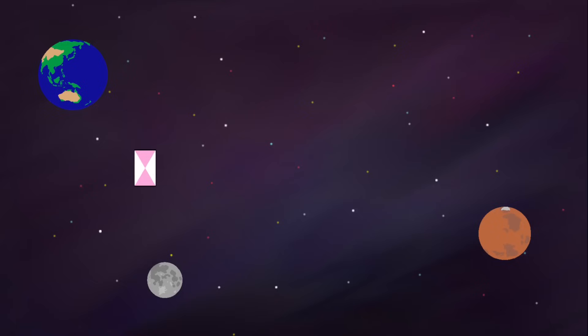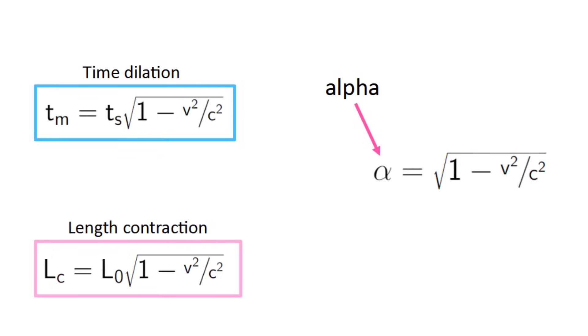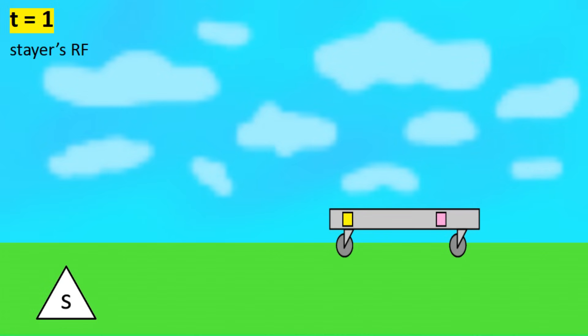But to put it simply, as an observer moves faster through space, they begin to move slower through time, and their length is also contracted along the direction of motion. These both occur by a factor called alpha, which is equal to square root of 1 minus v squared over c squared. So if we account for them in the example, it would look something like this.